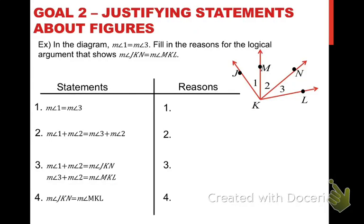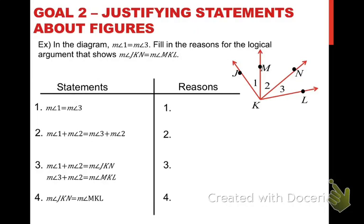Now this next thing is going to look pretty tough at the beginning. We are talking about justifying statements about figures, so I need to include an example of that within this video. What we're going to be doing here is justifying a statement that deals with angles. It says here in the diagram that the measure of angle one equals the measure of angle three, and it wants us to fill in the reasons for the logical argument that shows that the measure of angle JKN equals the measure of angle MKL.